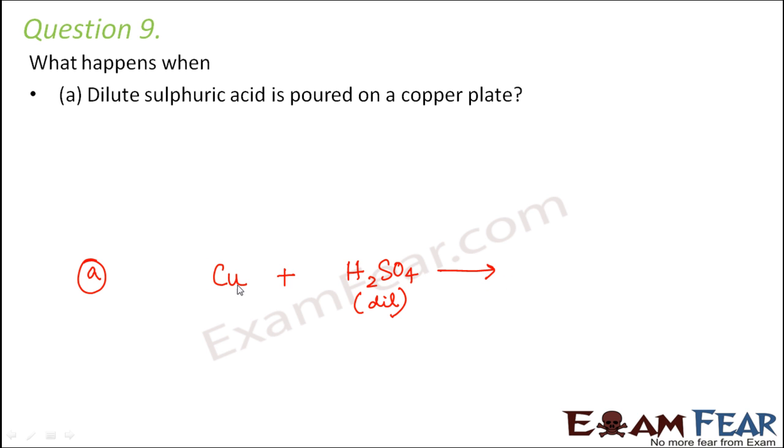Copper is a metal reacting with acid - sulphuric acid. Whenever a metal reacts with acid, hydrogen gas is released and a salt is formed. So what is that salt here? That is CuSO4. Copper sulphate will be formed and hydrogen gas will be released.